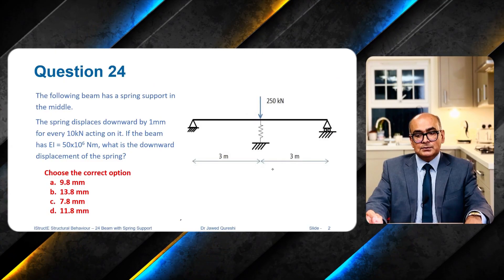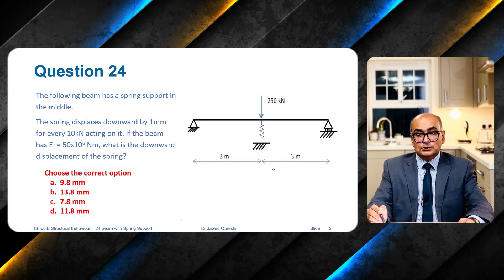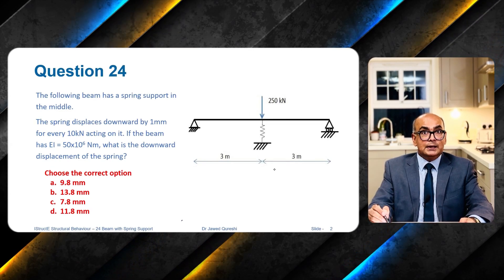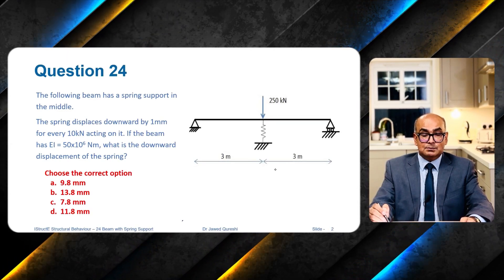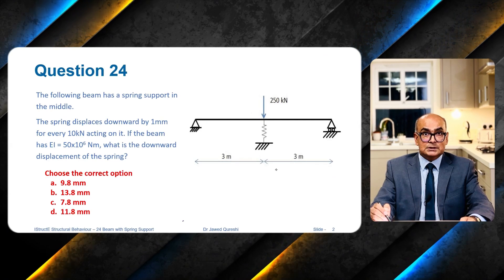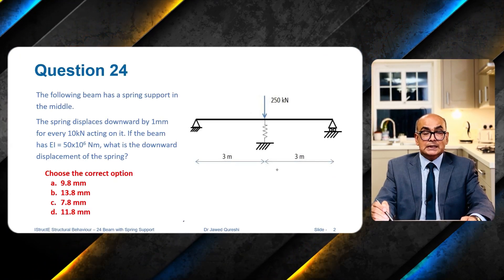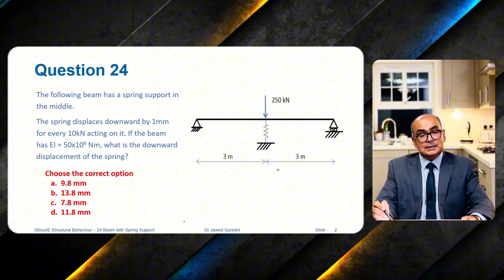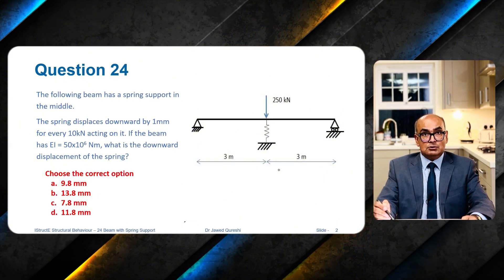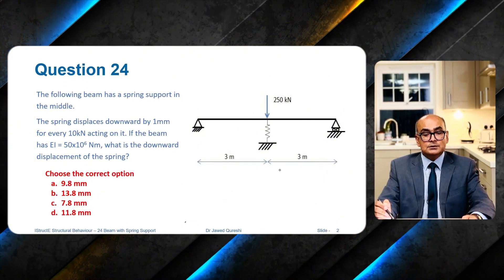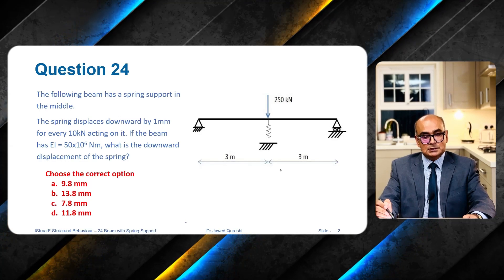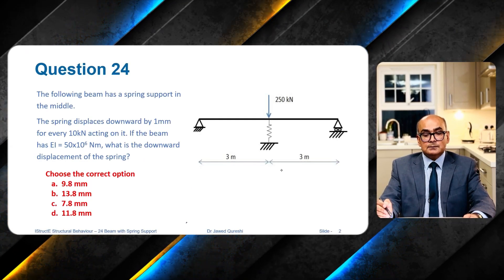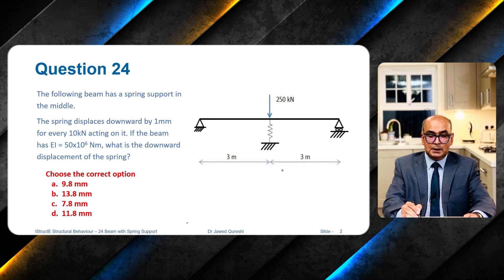In this example, we have 250 kilonewton applied and we have a spring support underneath it which is fixed at the base. Clearly this structure is an indeterminate structure, which means that we cannot solve it using ordinary equilibrium equations.